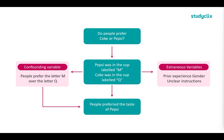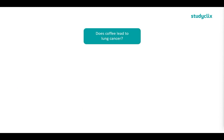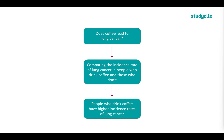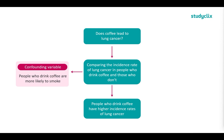With our confounding variable, we know it has definitely had an effect, but we just can't separate it from our independent variable. Another example: does coffee lead to lung cancer? We compare the incidence rate of lung cancer in people who drink coffee versus those who don't, and we found that people who drink coffee have a higher incidence of lung cancer. Before jumping to conclusions — coffee does not lead to lung cancer. There is a confounding variable: people who drink coffee are more likely to smoke, and smoking leads to lung cancer. So we have the influence of a third variable that is not our independent variable.